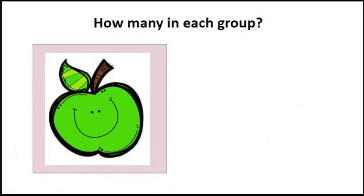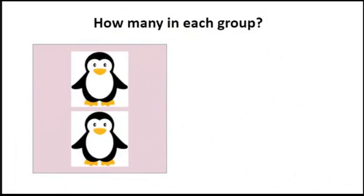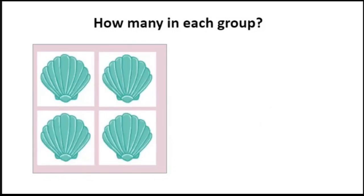Now we are going to count how many we see. How many in each group? How many apples do you see? One. There is one apple. Good job. How many penguins do you see? Two. Two penguins. Great. How many shells do you see? Four. There are four shells. Good job.